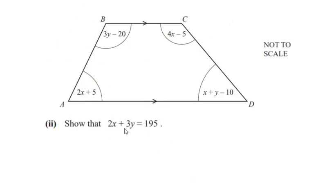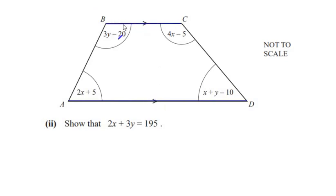Part 2: show that 2x plus 3y is equal to 195. Looking at the diagram, the line AD is parallel to line BC because the two arrows indicate the two lines are parallel to each other. This means AB is acting as a transversal line and it cuts the two lines at point A and at point B.